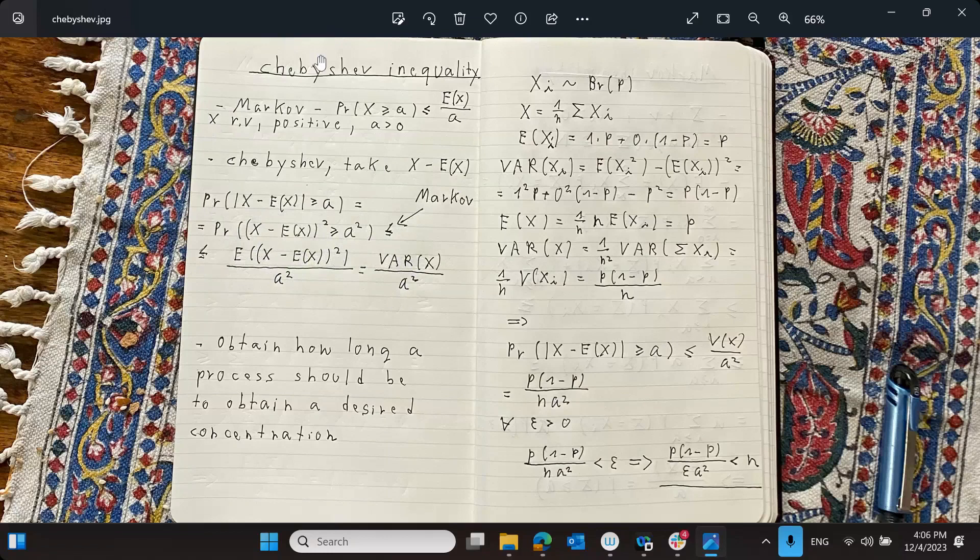So the Chebyshev inequality tells us what's the probability of the variable being far away from the average. Again, a concentration inequality. We are bounding it using the variance.